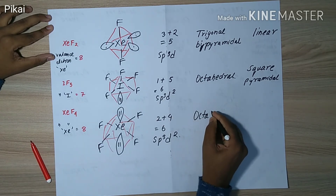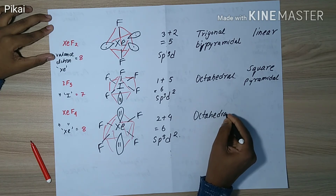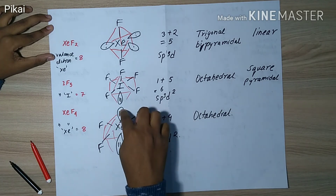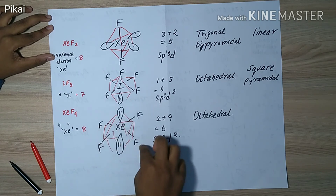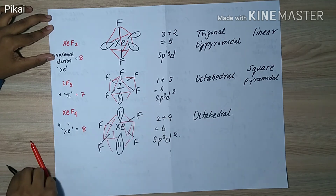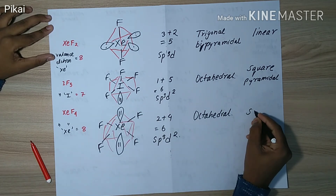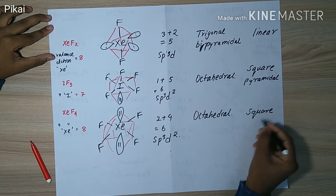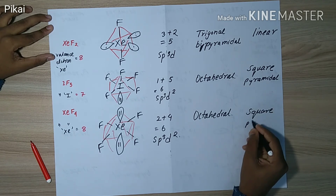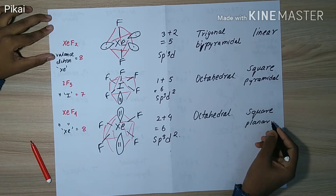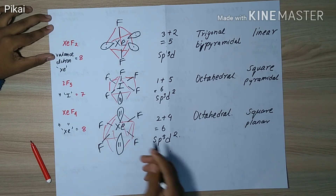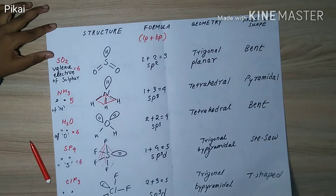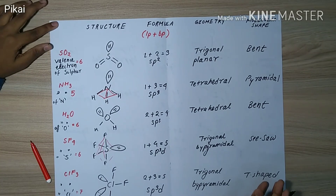sp3d2 gives octahedral geometry, the same as the previous molecule. The molecular shape, without considering the lone pairs, is a square in a single plane — square planar.